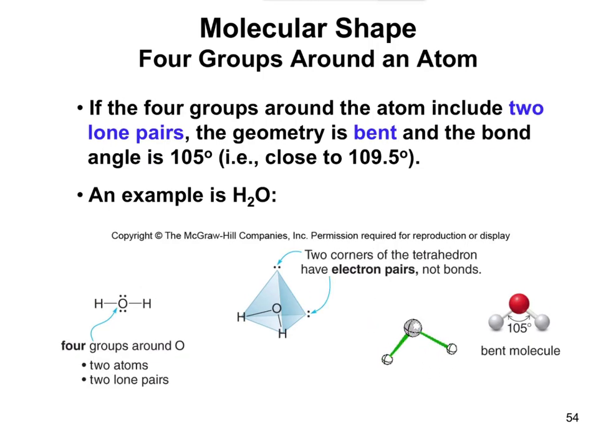The last one we're going to look at here is when you have four groups again, but this time you have two groups that are atoms. Oxygen has the atoms attached to it, and then the other two groups are the lone pairs. So two atoms and two lone pairs gives you bent geometry. Whenever it's bent, you have that tetrahedron and you have two of the spots occupied by lone pairs of electrons.